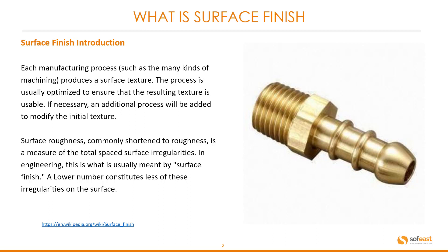The process is usually optimized to ensure that the resulting texture is usable. If necessary, an additional process will be added to modify the initial texture. Surface roughness, commonly shortened to roughness, is a measure of the total spaced surface irregularities. In engineering, this is what is usually meant by surface finish. A lower number constitutes less of these irregularities on the surface.